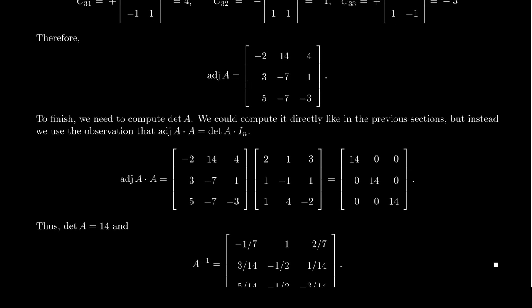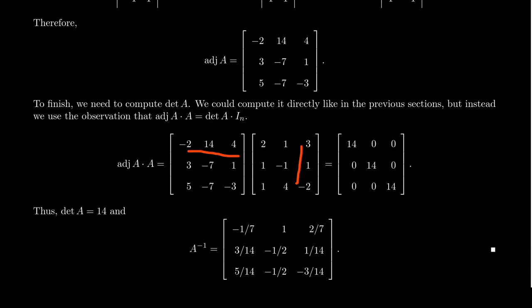And then once you have this adjugate, we can double check. If we multiply this matrix by the original matrix A right there, you can double check there. Negative 2 times 2, that's a negative 4. 14 times 1, that is a 14. And 4 times 1, that's positive 4. The positive 4 cancels with the negative 4, giving us a 14 right here. You can go through the arithmetic and see that this matrix, which we computed for the adjugate, multiplies by A to give you 14 down the diagonal and 0s everywhere else. So this is just 14 times the identity matrix, I_3.